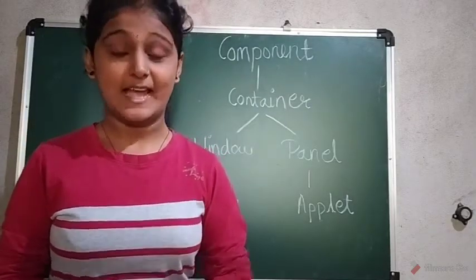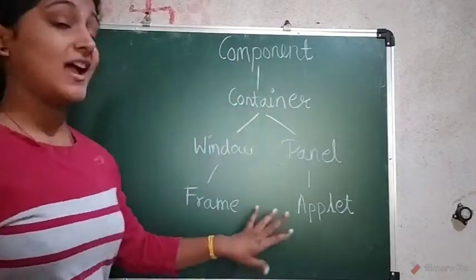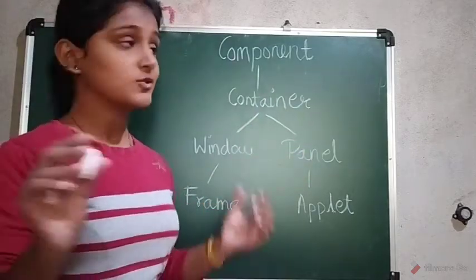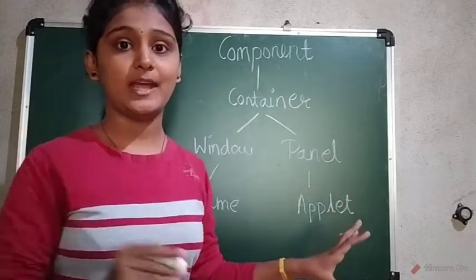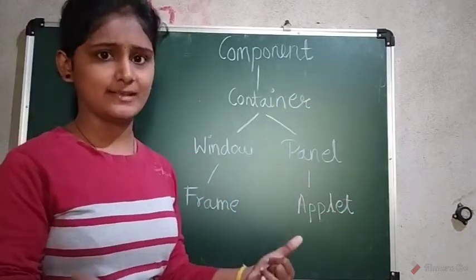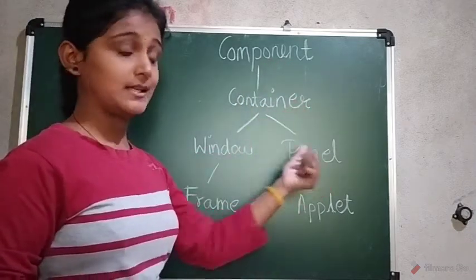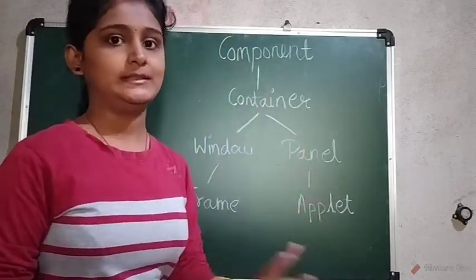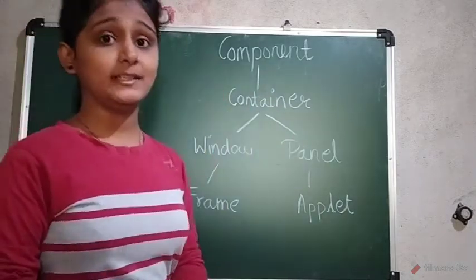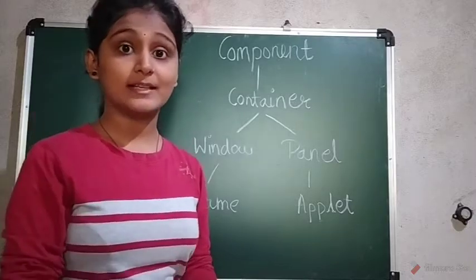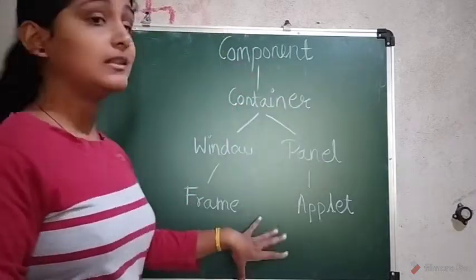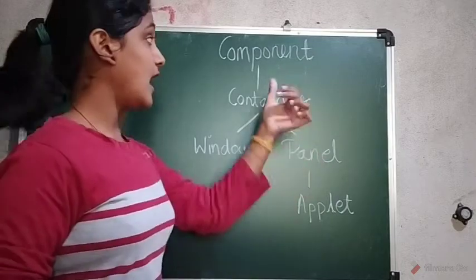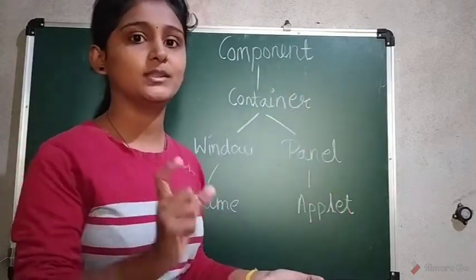Hello everyone, welcome back to the channel. In this video we are going to see the AWT hierarchy, which covers the Component, Container, Window, Panel, and Frame. AWT is a collection of a number of classes and methods, and these are the classes of AWT — that is Component, Container, and others — which stands for Abstract Window Toolkit.